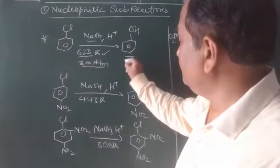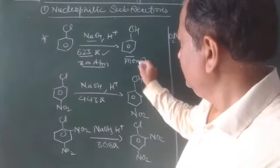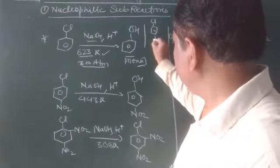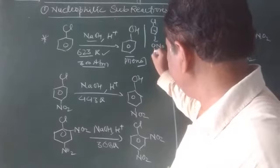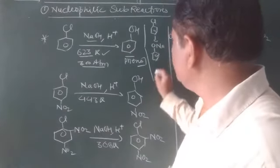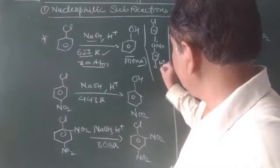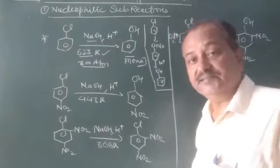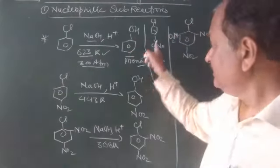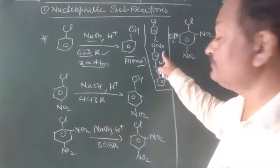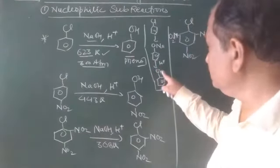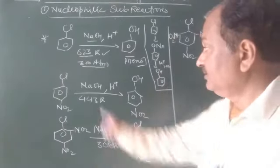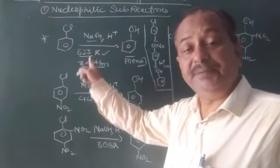Initially, sodium phenoxide is formed, and then sodium phenoxide undergoes acidic hydrolysis to form phenol. This requires very high pressure (300 atm) and very high temperature (603 K). In the second case, if an electron-withdrawing group like NO2 is present on the ring, it withdraws electron density and the C-Cl bond becomes slightly weaker. As a result, the reaction temperature is reduced to 443 K.